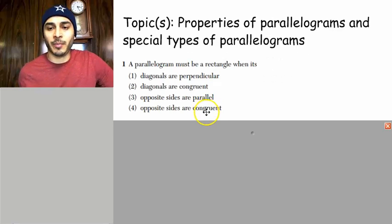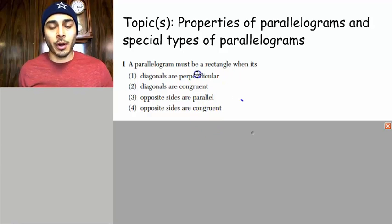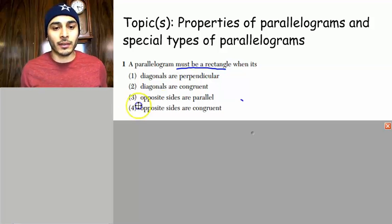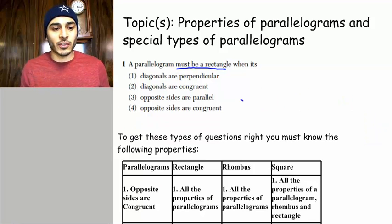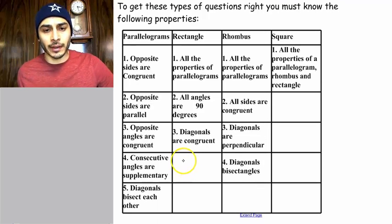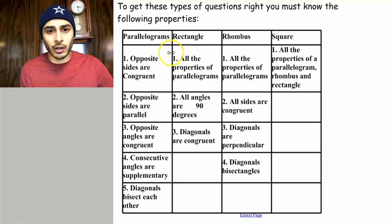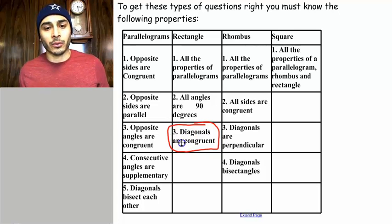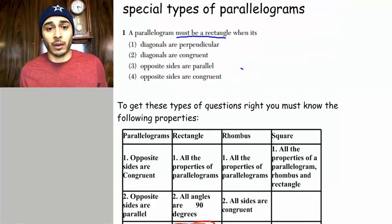Number one, the topic is properties of parallelograms and special types of parallelograms. A parallelogram must be a rectangle when its... In order to answer a question like this, you must know these properties that we've covered in class. You will see here that in a rectangle, the diagonals are congruent. So if we have congruent diagonals, then we will have a rectangle. So the answer to number one is diagonals are congruent.